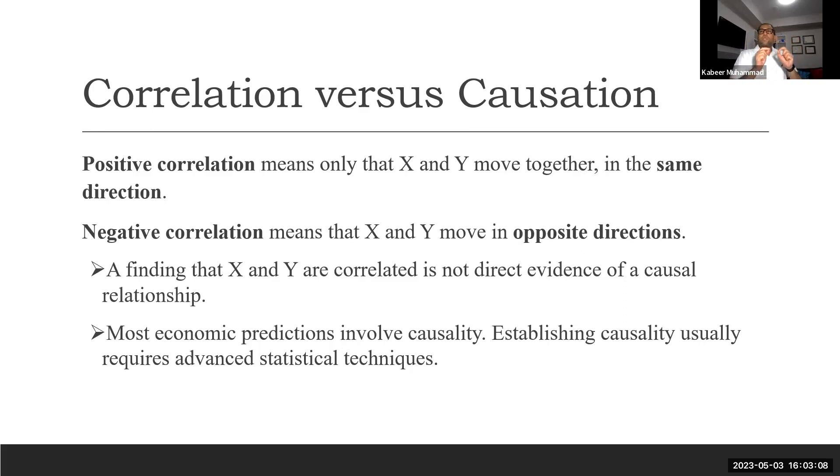When we want to see the relationship, it is also important to see what is cause and what is the effect. Causation is important as well. Finding that X and Y are correlated is not direct evidence of a causal relationship.